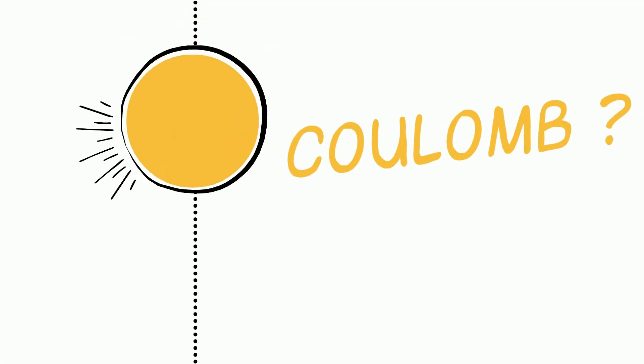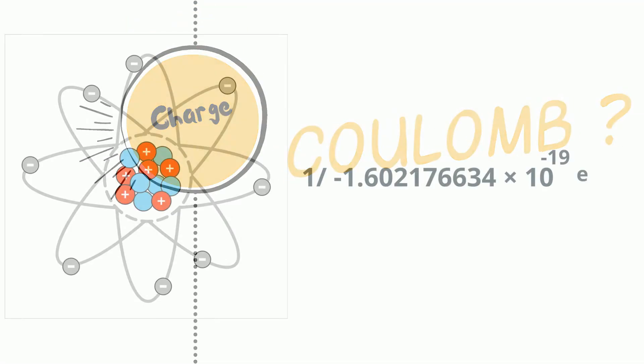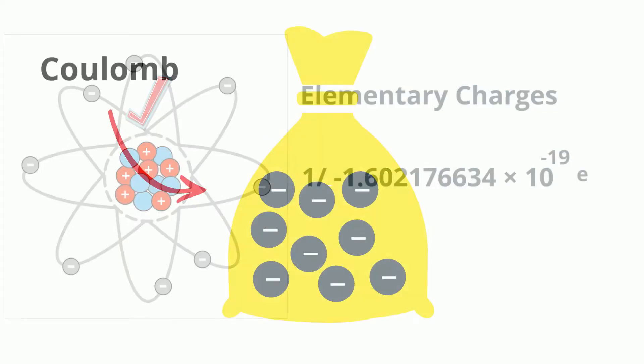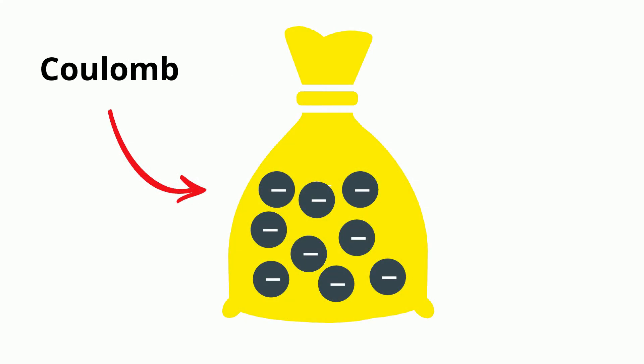Okay, but what about this coulomb? Coulomb is a measure of charge. It is equal to 1 over 1.6 times 10 to the minus 19 elementary charges, which is the charge of a single proton or the negative charge of a single electron. Another way you can think of a coulomb is that it's just a bag of electrons and each electron has a charge.